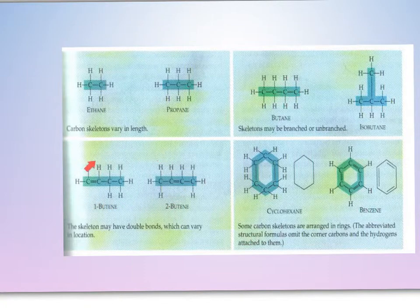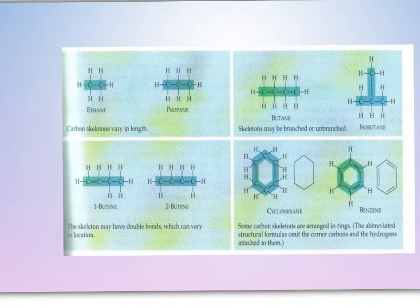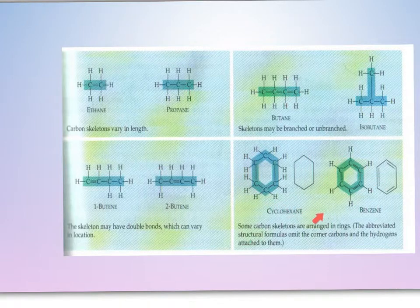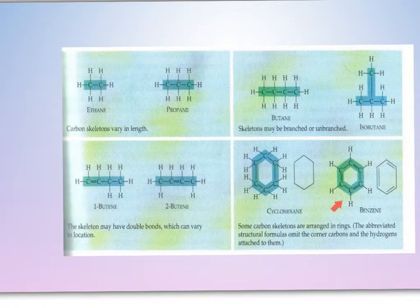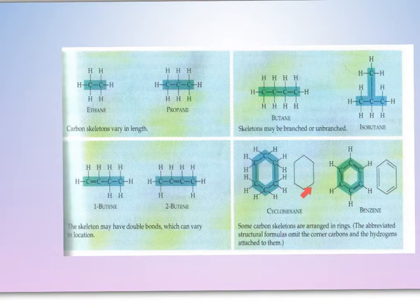Here is another example — again, same number of carbons, same number of hydrogens, but in this case the multiple bond has been moved. Because the bond is moved, they are two different chemical compounds with different characteristics. Now, these next two examples are not isomers — they do not have the same number of hydrogens — but I wanted to show them so you can see what ringed or aromatic compounds look like. This one is a ring structure and this one is an aromatic. The difference is that the aromatic has rotating double-single-double-single bonds all the way around it. We'll talk more about the difference between cyclic and aromatic compounds later in the series.